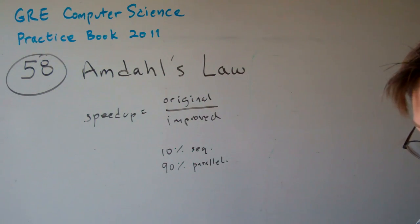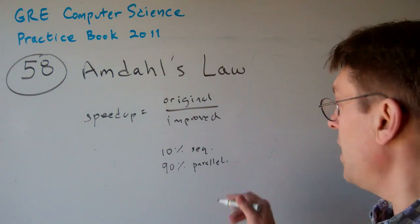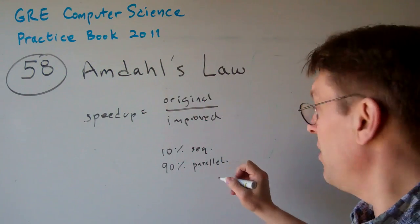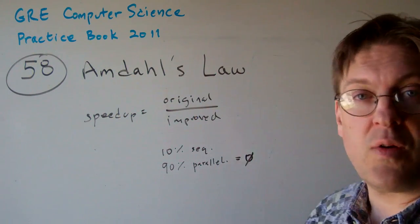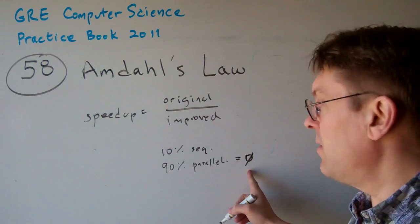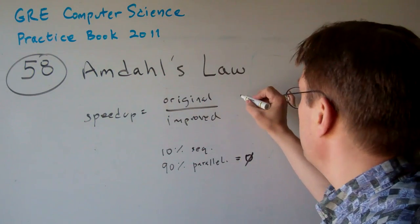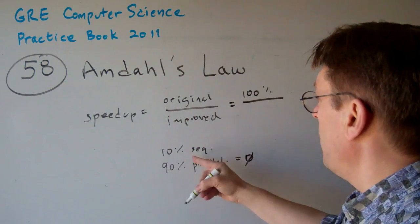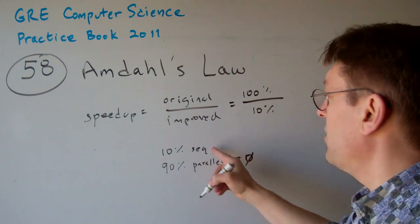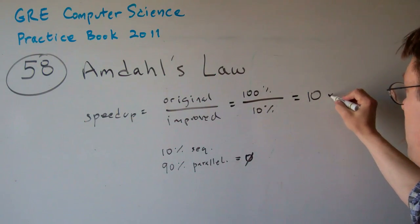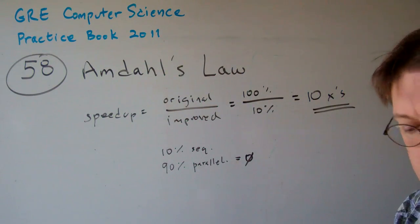Well, if it's 10% sequential, if we have an unlimited number of processors, the maximum theoretical part of this would be zero. Of course, it would never actually be zero, but theoretically that's the maximum amount that could possibly be done. So basically the original is going to be 100% and the improved is going to be 10% of the original. So that's why it's a 10 times improvement.